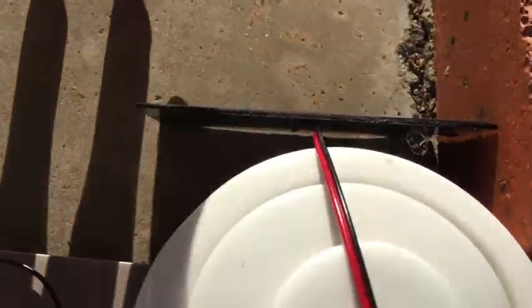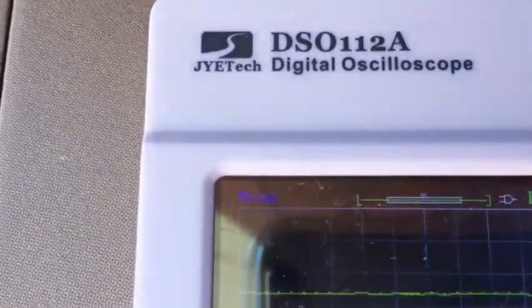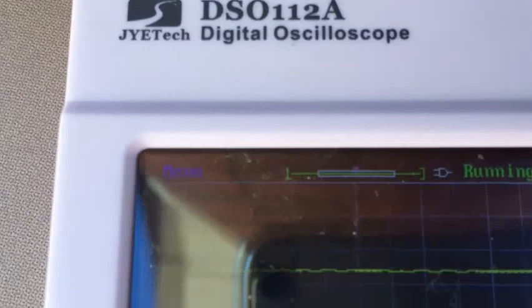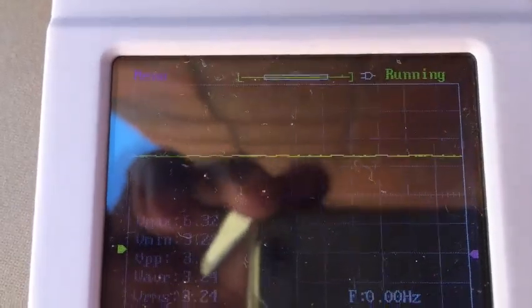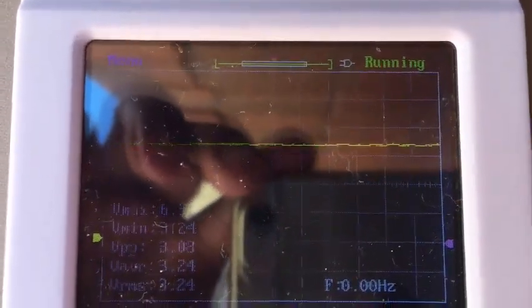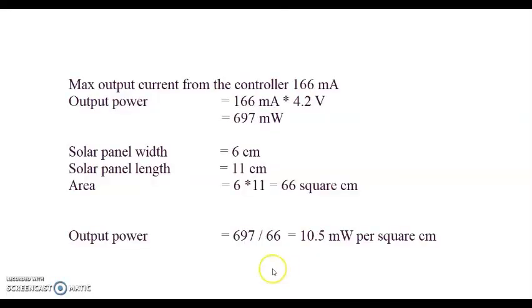When I cover the solar panel like this, and you see the oscilloscope, now I'm covering and taking it out. The waveform is looking like this. I'll put the picture of the waveform in the description website.